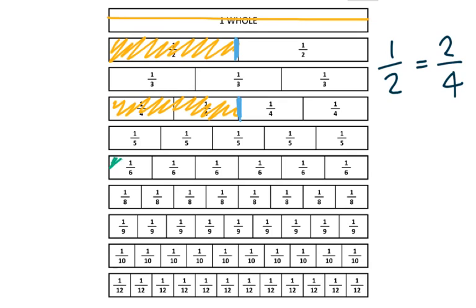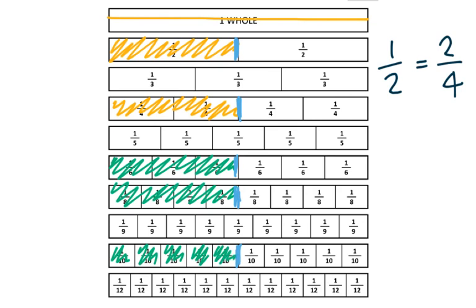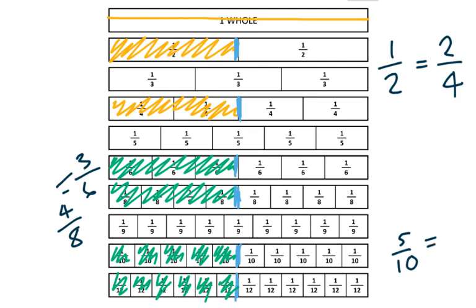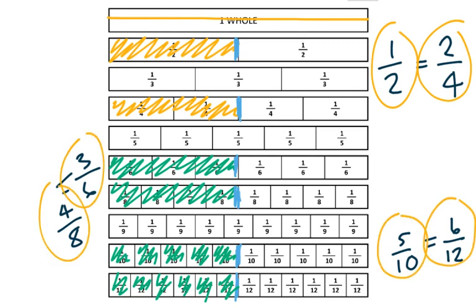I see that three sixths is also equivalent to one half. I see four eighths is equivalent to one half. I see that my tenths are going to be equal — five tenths is equivalent. And I see my twelfths — six twelfths are also equivalent. So I always like to think of a chocolate bar. If I eat half a chocolate bar, that's the same as me eating two fourths, which is the same as three sixths, which is equal to four eighths, which is equal to five tenths, and it's also equal to six twelfths. All of these fractions are equivalent to each other because they take up the same amount of our whole chocolate bar.